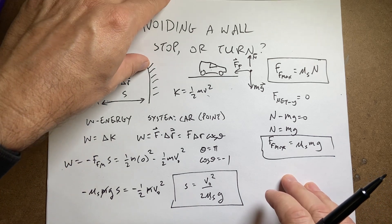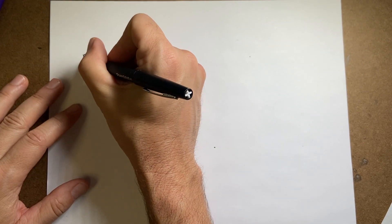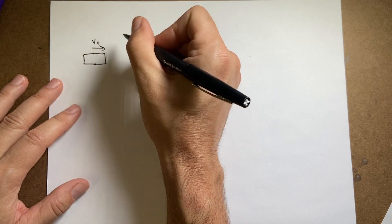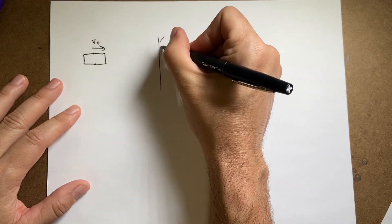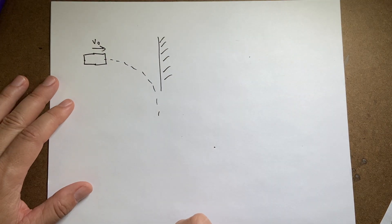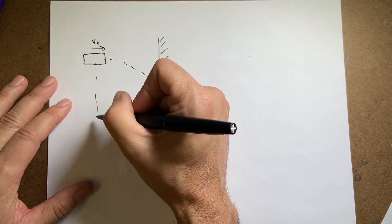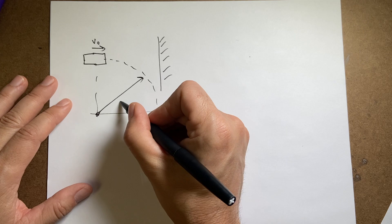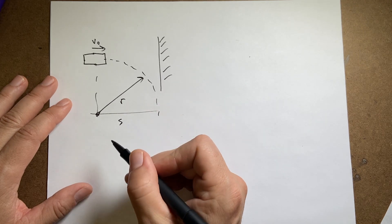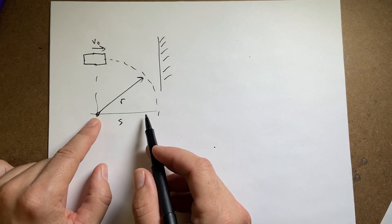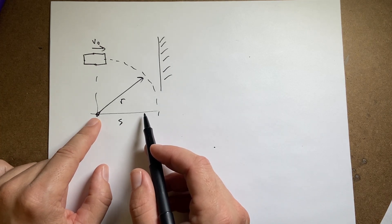Okay, so here is my situation. There's my car, same car, same initial velocity, same wall. But now I'm going to do this. I'm going to just barely miss it by turning in a circle of radius r, where this is also s. So the radius of that circle has to be s. So now what's my radius of curvature, what's my radius of turning for this case?